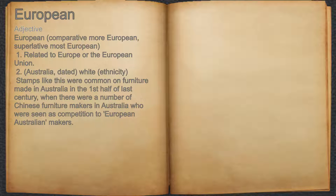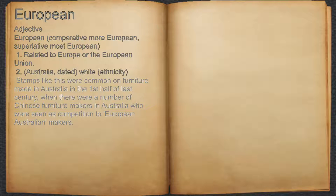European. Adjective. 1. Related to Europe or the European Union. 2. Australia, dated, white ethnicity. For example, stamps like this were common on furniture made in Australia in the first half of last century, when there were a number of Chinese furniture makers in Australia who were seen as competition to European-Australian makers.